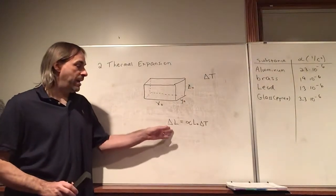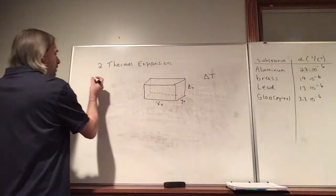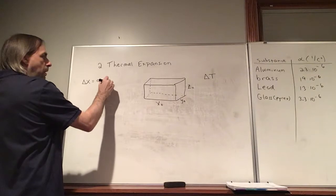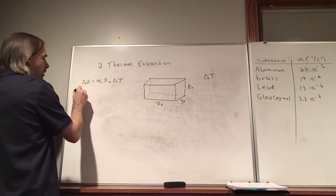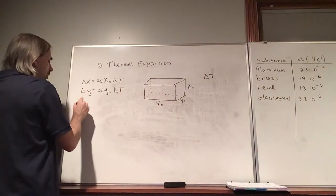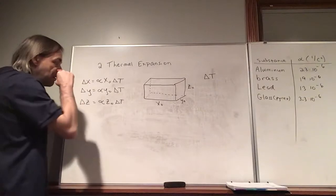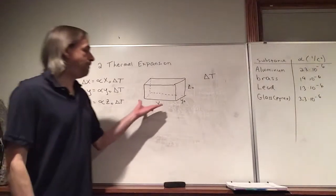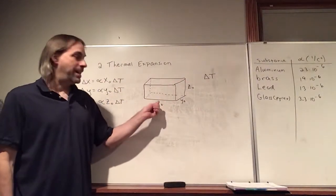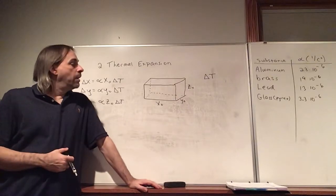For a solid, we can write the expansion equation for each dimension separately: delta X = alpha × X-naught × delta T, delta Y = alpha × Y-naught × delta T, and delta Z = alpha × Z-naught × delta T. Each dimension expands independently, so a longer dimension in X will expand more in the X direction than the shorter Y or Z dimensions.